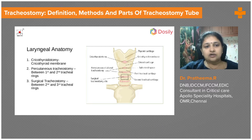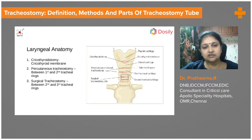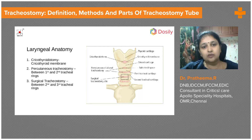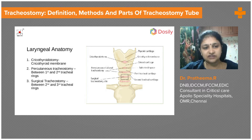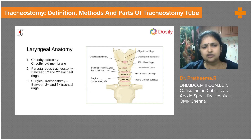Touching on the laryngeal anatomy, we have the thyroid cartilage and the cricoid, and between them is the cricothyroid membrane where we perform cricothyrotomy — an emergency airway procedure. Below the cricoid are the tracheal rings 1, 2, 3, and 4. Between the first and second tracheal rings we perform percutaneous tracheostomy, while surgical tracheostomy is usually done between the second and third rings, a little lower down.